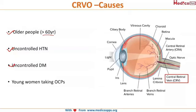CRVO is predominantly a condition seen in older people. However, if you see it in younger people, you should always elicit a history of taking oral contraceptive pills. So whenever you find CRVO in a young female, you should attribute it to the consumption of oral contraceptive pills.